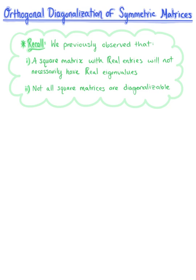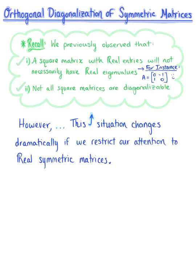In this section, we are exploring orthogonal diagonalization of symmetric matrices. Let's quickly recall that we've previously observed that a square matrix with real entries will not necessarily have real eigenvalues. We've also observed that not all square matrices are diagonalizable. However, this situation changes dramatically when we restrict our attention to real symmetric matrices.